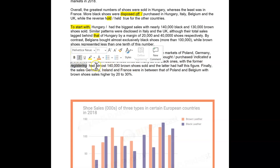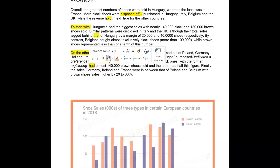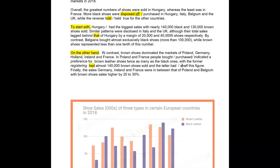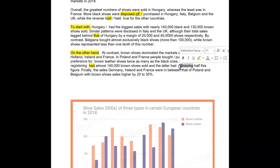Almost is okay. 140,000 sold. And the latter — because I've got 'indicated,' you'd need to have 'showing half this figure.' So what we're looking at here, the reason I'm changing some of your words is because you want to get points for vocabulary and not just the grammar. We want correct grammar, but we also want vocabulary.